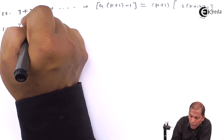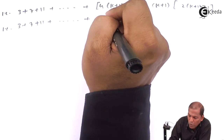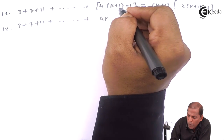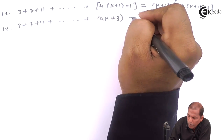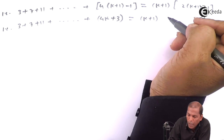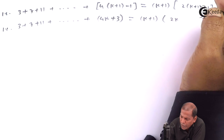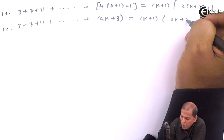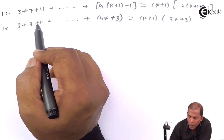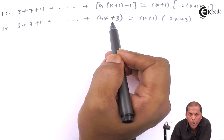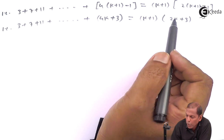Simplifying the last term, 4(k+1) minus 1 gives 4k plus 3. And the right hand side becomes (k+1)(2k+2+1), which is (k+1)(2k+3). So we have to prove that 3 plus 7 plus 11 plus ... plus (4k plus 3) equals (k+1)(2k+3).